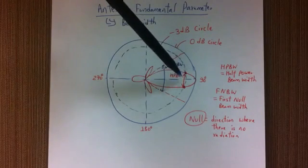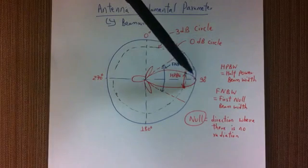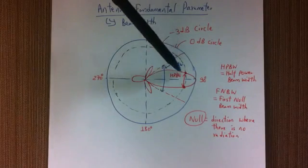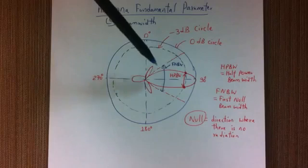The width of this beam is called half power beam width. So if you have this 0 dB circle and then this circle is negative 3 dB, then from this point to this point is your half power beam width.